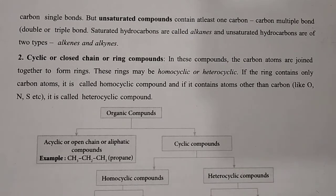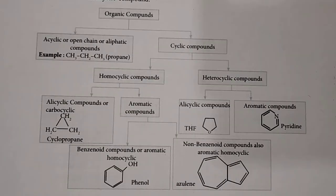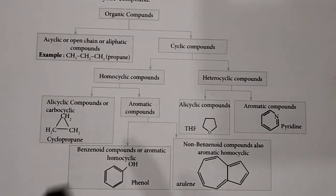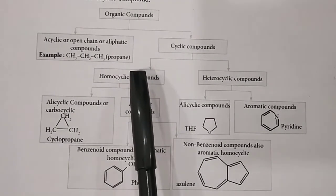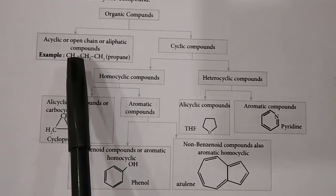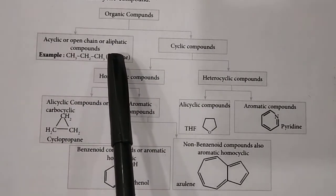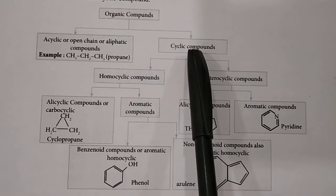The classification of organic chemistry can be viewed as a complete chart. Organic compounds are classified into two major parts: acyclic or open chain, and cyclic compounds.